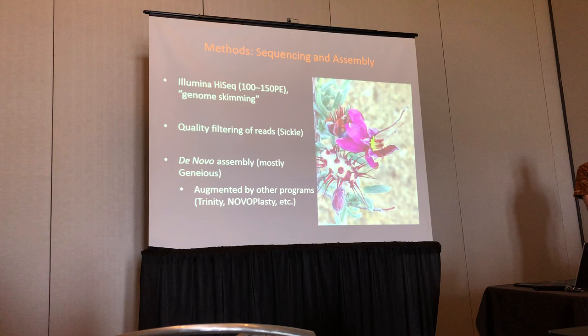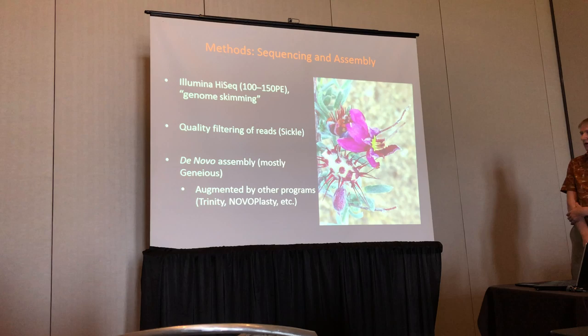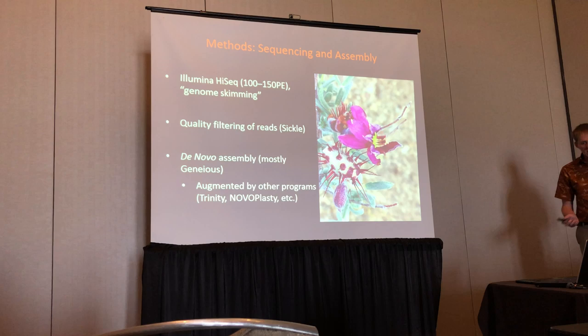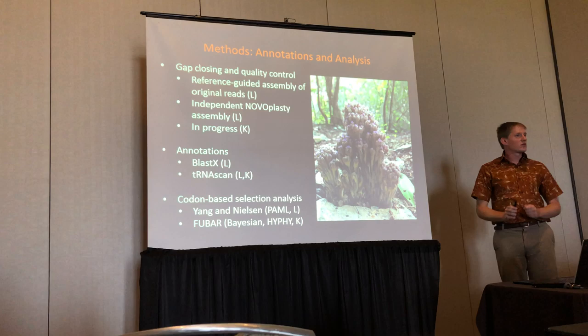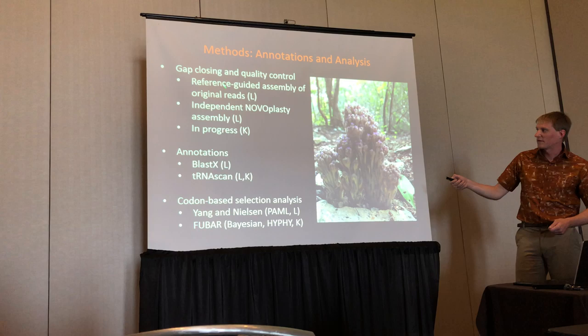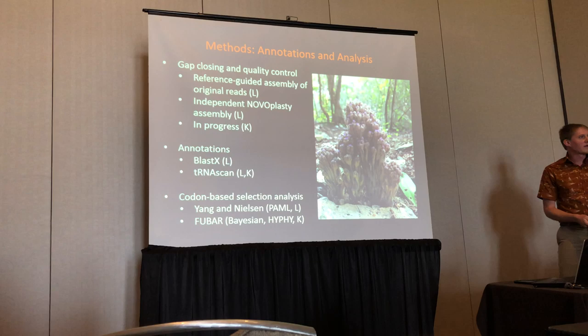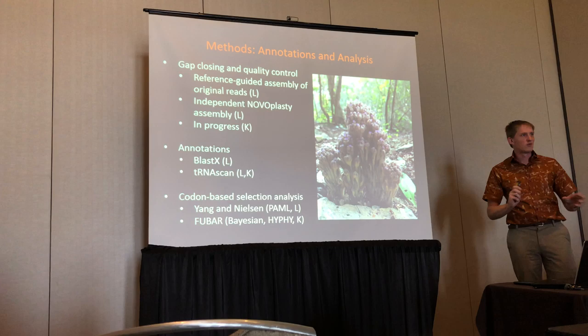For methods, we used genome skimming because we were just looking at the chloroplast genome, which is present in high copy number, and did de novo assemblies with a couple of different programs to check our work. There are some variations between the two parts of the study — we used slightly different methods for Lenoa and Crameria — in part due to different problems faced in annotating or assembling these genomes, but also because these were actually two different studies done at two different times.